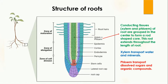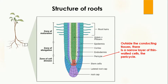Looking at the cross-section of the root from inside to outside, the innermost part contains xylem and phloem — the conducting tissues. These conducting tissues are grouped together in the center to form a rod-shaped core. The purpose of xylem is to transport water and minerals, while the purpose of phloem is to transport sugar and organic compounds to the upper parts of the plant.